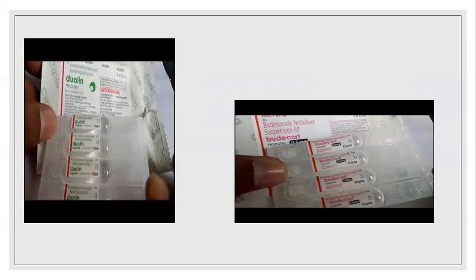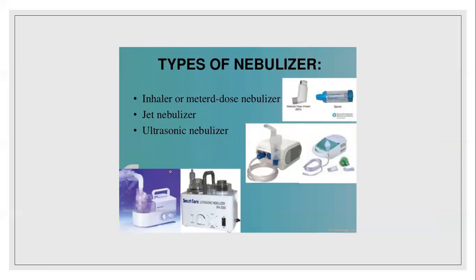These are the common medications that we can use to deliver nebulization procedures. This is Duolin — Duolin respules are available in different kinds. According to the doctor's order, we can select and administer the medication. The types of nebulizers include: the inhaler or metered dose nebulizer, jet nebulizers, and ultrasonic nebulizers. The ultimate principle will be the same, but the mechanism of how each is used will be different.